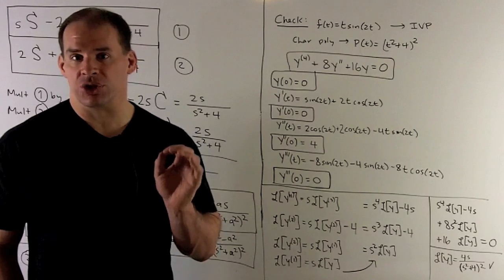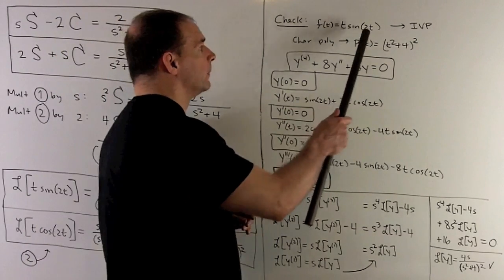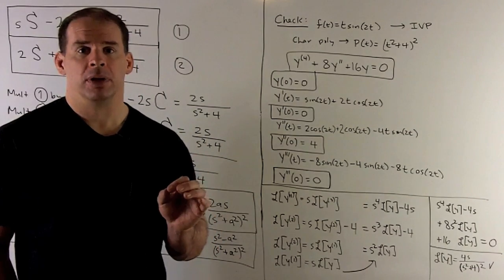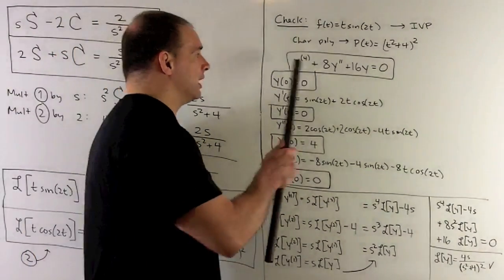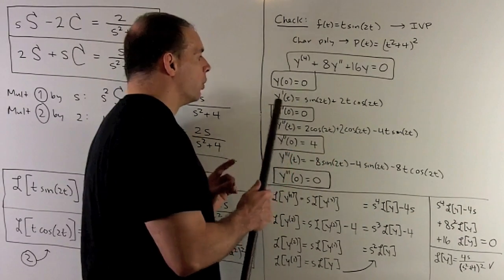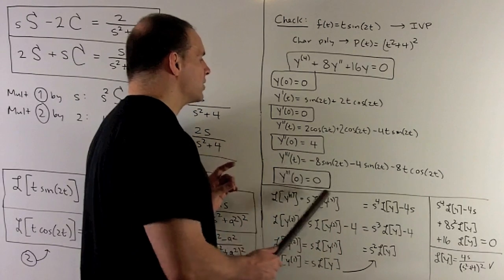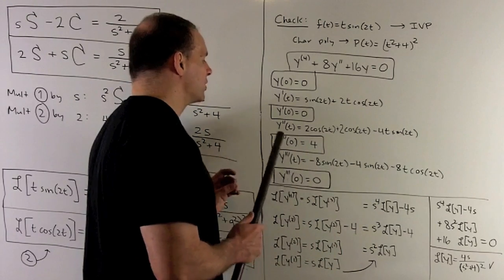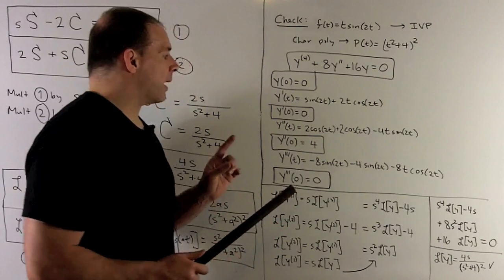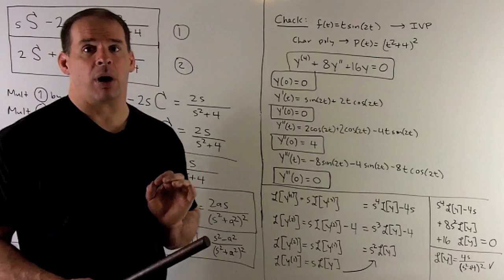All we need now are the initial conditions. We take f(t) = t·sin(2t), compute as many derivatives as needed, and evaluate at 0. Since our ODE is fourth order, we need three derivatives. When we work those out and evaluate at 0, everything comes out 0 except the second derivative of y at 0, which equals 4. Those values in the boxes form our initial value problem.